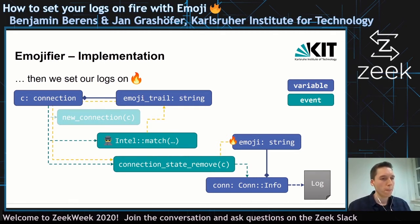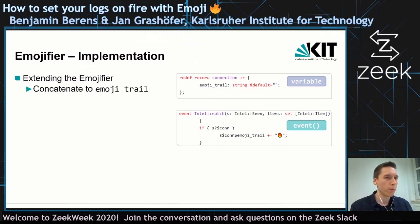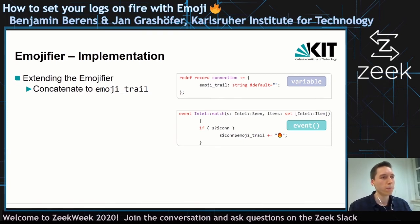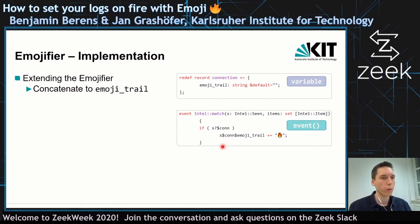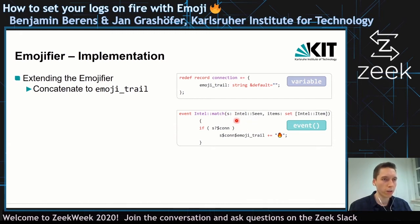Extending the emoji fire now is quite simple. We have that emoji trail that is also part of the connection record, basically available in all events. You can see that in the intelligence match event — you can access the connection variable via the intel scene.